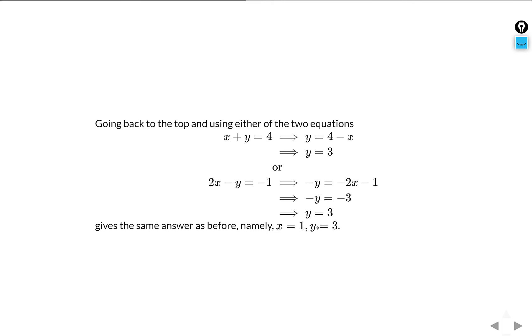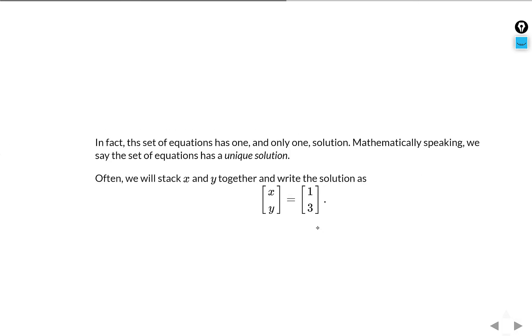In other words, the solution is unique. x equals 1 and y equals 3 simultaneously satisfy our systems of linear equations. So the solution is unique, and we often stack the variables in a vector, an array that you see here. This means x equals 1 and y equals 3.